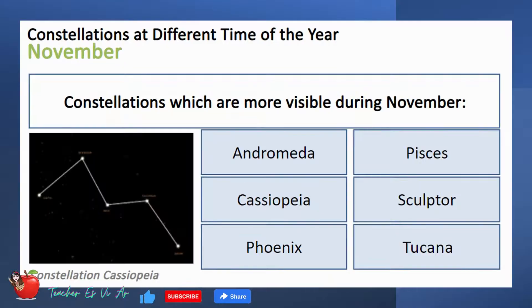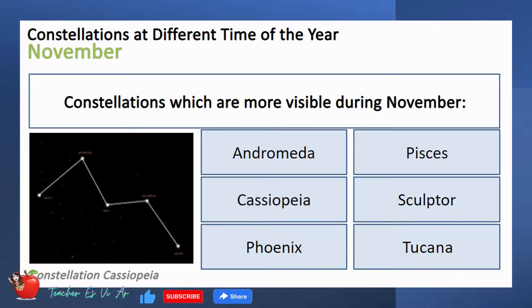These are the constellations more visible during November: Andromeda, Pisces, Cassiopeia, Sculptor, Phoenix, and Tucana.